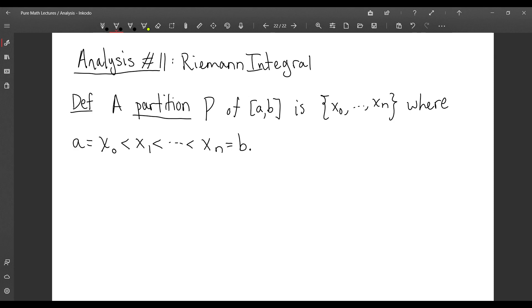The mesh of P is denoted with these double absolute value bars and is going to be the maximum value of Xᵢ minus Xᵢ₋₁. There's finitely many of these values, so we can take a maximum.